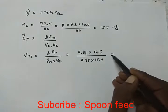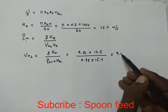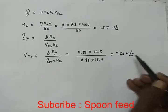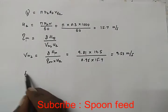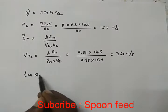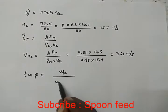So Vw2 value is 9.53 meters per second. For the outlet velocity triangle, tan phi formula is Vf2 divided by u2 minus Vw2.